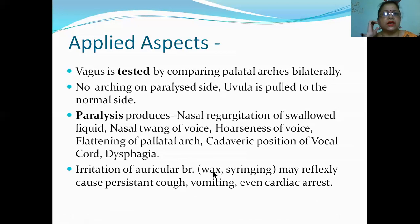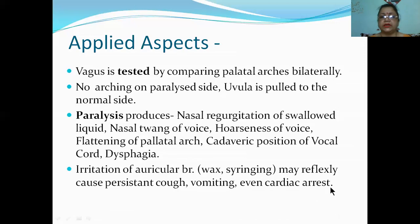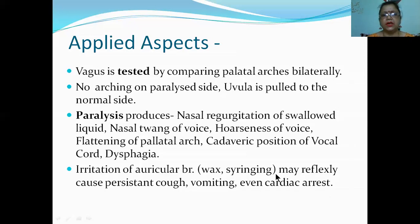Small children may have wax in the ear. The auricular branch of the vagus supplies the external ear. Irritation of this branch - during wax removal or syringing - may reflexly cause persistent cough and vomiting in children, and even cardiac arrest in some cases, because ultimately it is the vagus nerve and it also gives a branch to the heart.